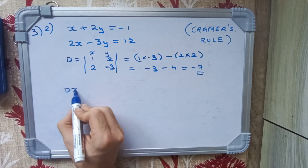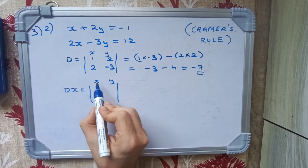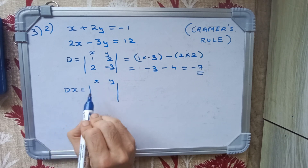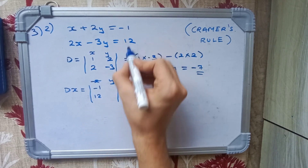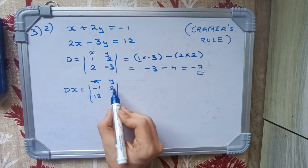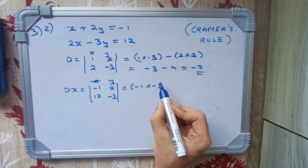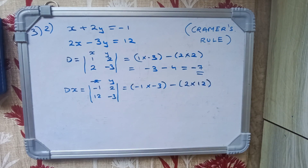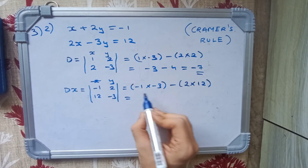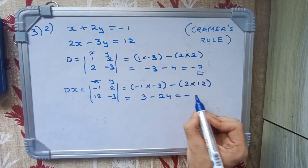Now let's find Dx. We replace the x-column with constants, writing -1 and 12, and keep y-values as 2 and -3. Cross multiplying: (-1) × (-3) minus 2 × 12. Minus minus is plus, so 3 minus 24, giving Dx = -21.